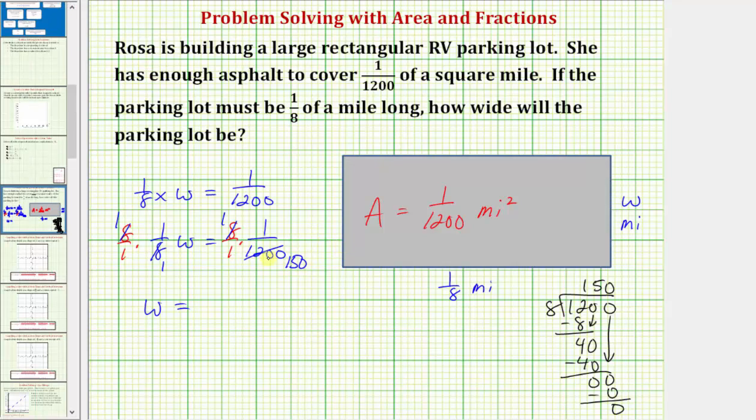Which means on the right side, when we multiply, in the numerator we have one times one, which is one. In the denominator we have one times 150, which is 150.